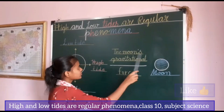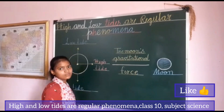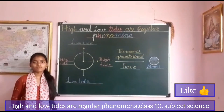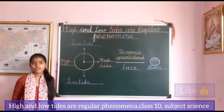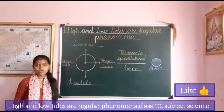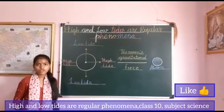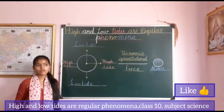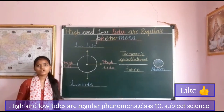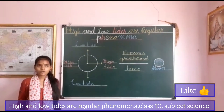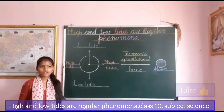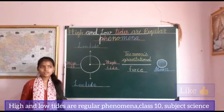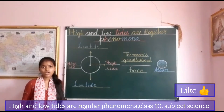The moon's gravitational force acts on the sea level. The earth is directly influenced by the gravitational force, and due to this gravitational force, the outer water of the earth is pulled toward the direction of the moon, hence there occurs a high tide.